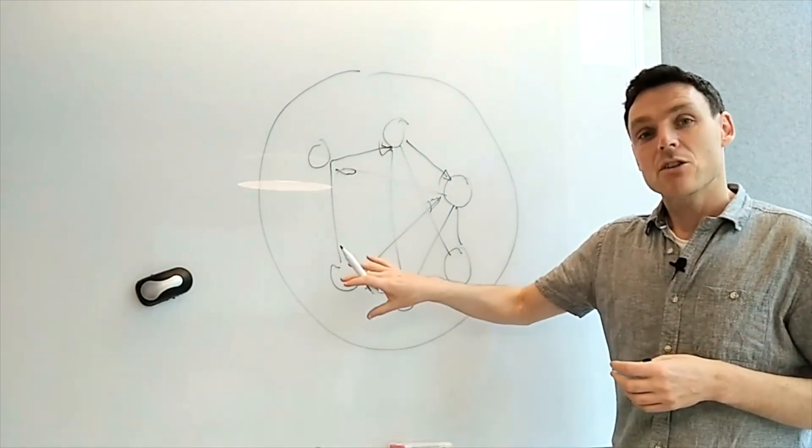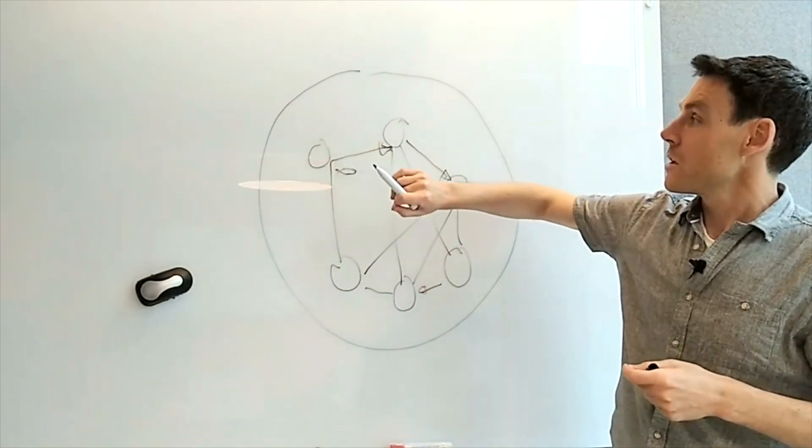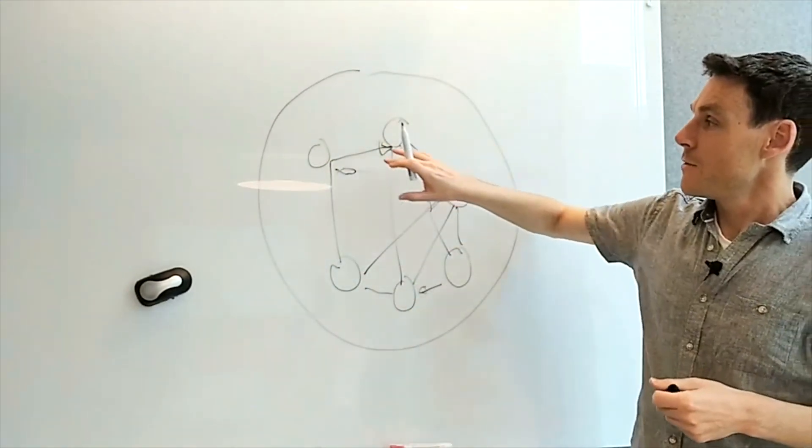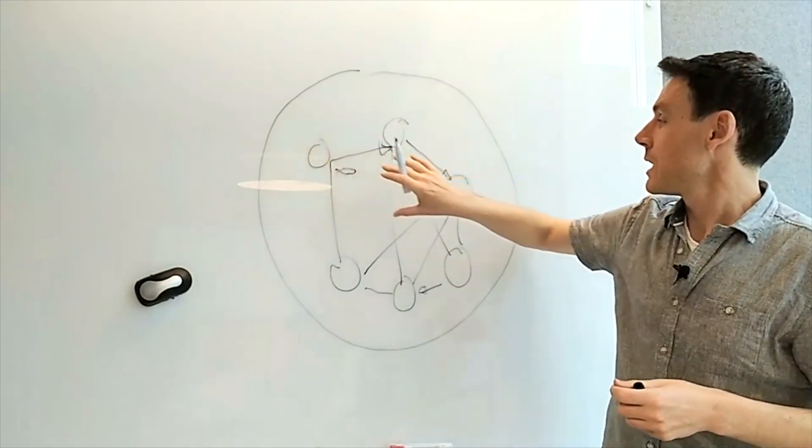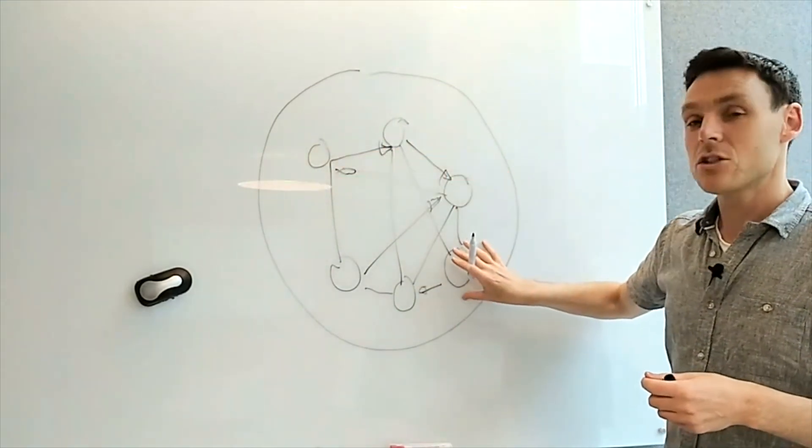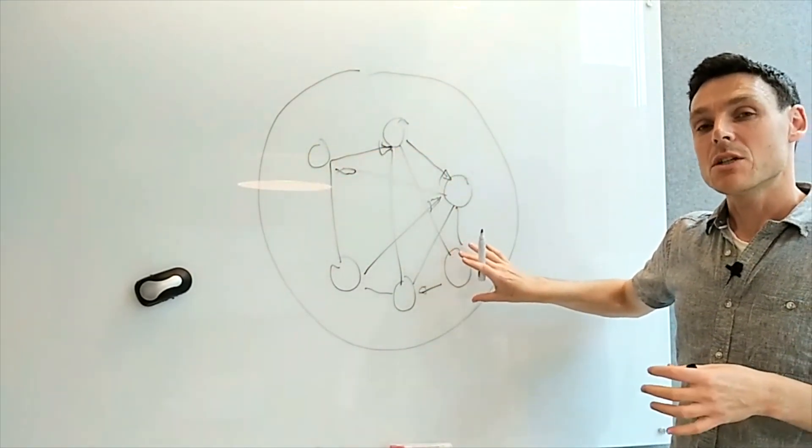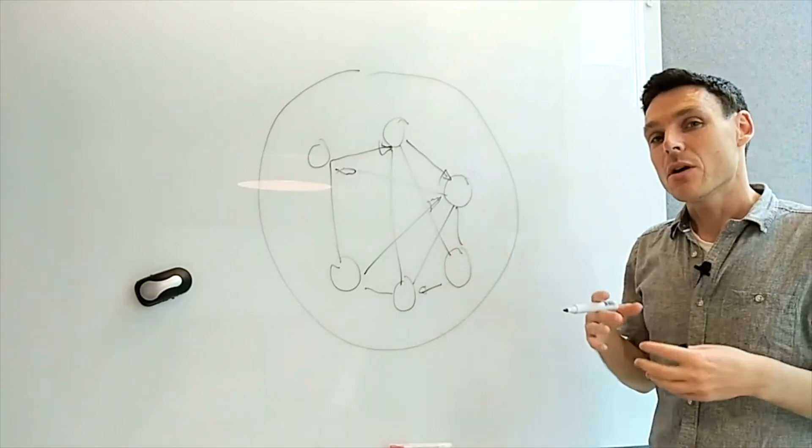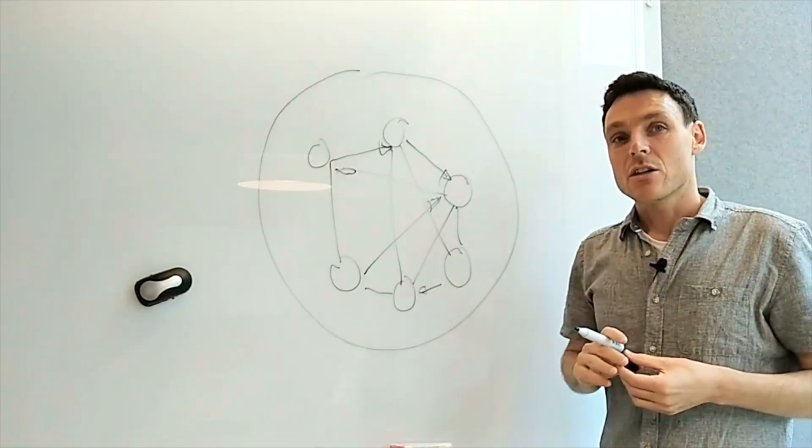You might need to go and do something over here in the food system or in the financial system or political system or whatever other elements in this system far over here that would lead to changes here that would lead to changes here and that would give us much higher leverage that would actually unblock us in our change initiative.